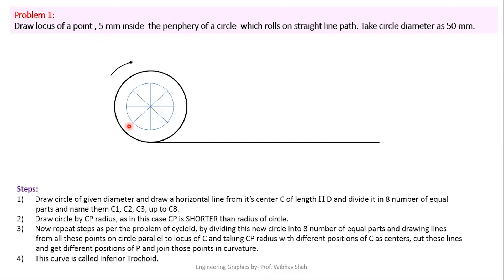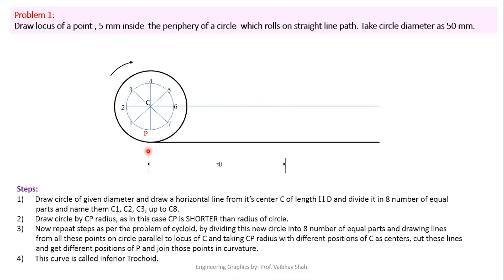After dividing the generating circle into 8 equal parts, let us give the initial position of point P at the bottom of the circle. Number the points 0, 1, 2, 3, 4, 5, 6, 7, and 8 — write both 0 and 8 in your answer. After that, draw a straight line from the center and divide this center line into 8 equal parts, labeling them C1, C2, C3, C4, C5, C6, C7, and C8.